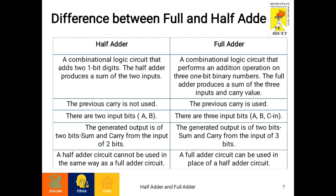The half adder produces a sum of 2 inputs. A full adder is a combinational logic circuit that performs addition on three 1-bit binary numbers and produces a sum of 3 inputs and a carry value. In a half adder, the previous carry value is not used, whereas in a full adder, the previous carry is used.